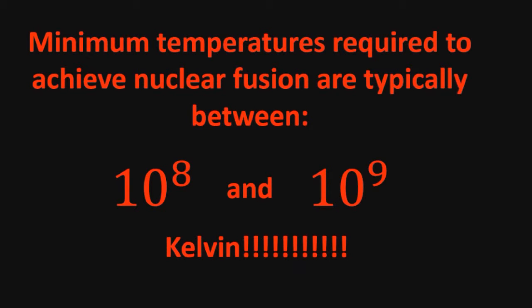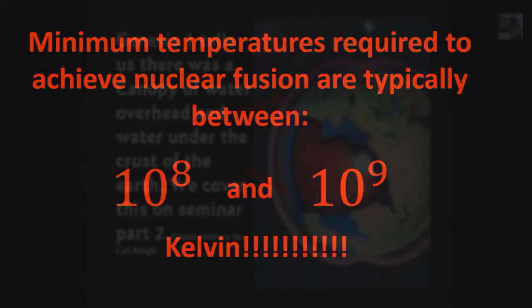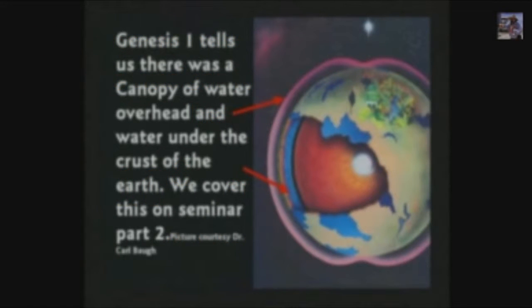Minimum temperatures required to achieve nuclear fusion typically lie between 10⁸ and 10⁹ Kelvin. If the canopy was miraculously brought into existence around the Earth during creation week, as claimed, it would have instantaneously transformed into a star. The Earth would be completely melted by the immense amount of now-solar radiation. Much more effective way to wipe out life on Earth than a bit of water, wouldn't you agree?